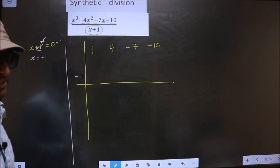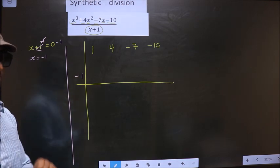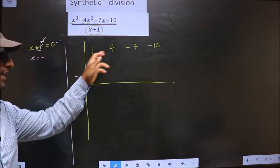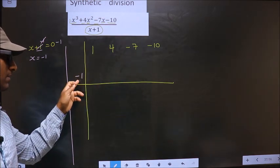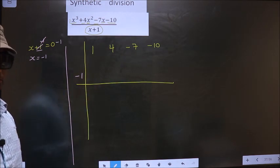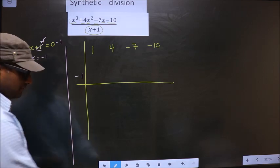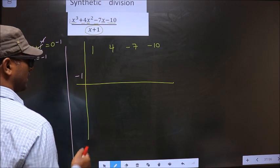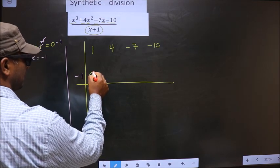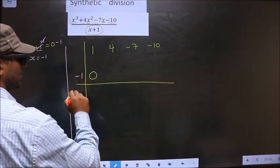This is your step 1. Writing coefficients taken from the numerator here and x value that you got from the denominator here. Next. Now we start by placing 0 here. So now you put 0 here.